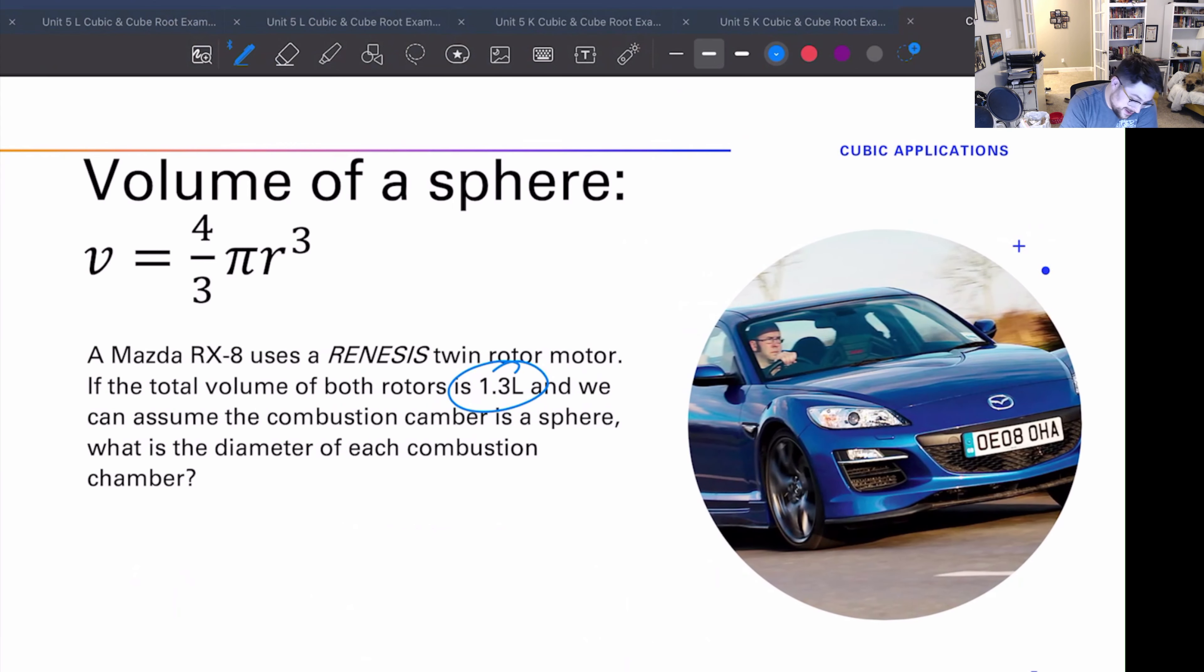Also, the early ones tended to blow up, so all in all great car. But let's see what we can do. Now the first thing, we have a twin rotor, means this 1.3 liter is a lie. We need half of that, so 1.3 divided by 2 equals the size of each rotor, comes out to 0.65. So this is liters per rotor. Okay, cool, that's going to be our volume for one rotor.